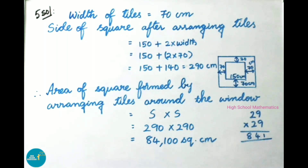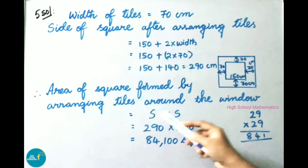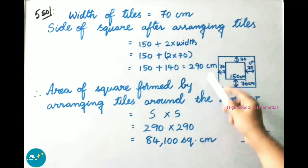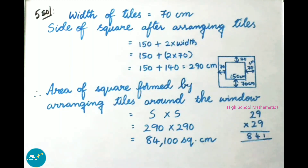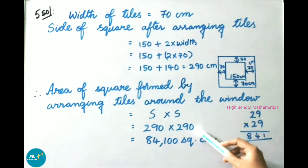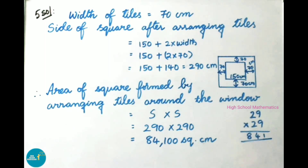Therefore the area of the square formed by arranging tiles around the window is side into side, that is 290 into 290. Since 29 into 29 is 841, we get 290 into 290 equals 84,100 square cm.